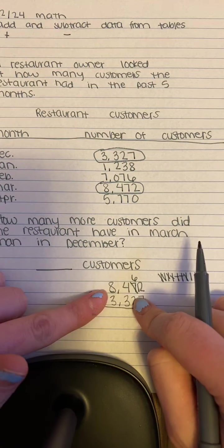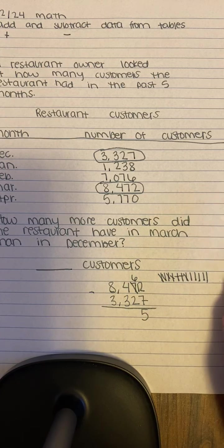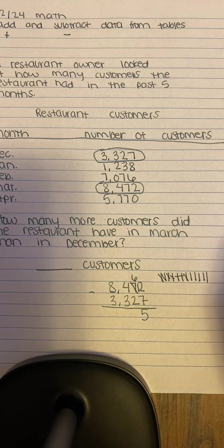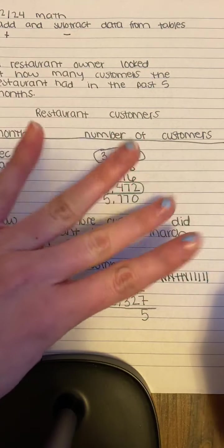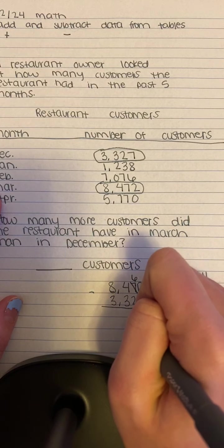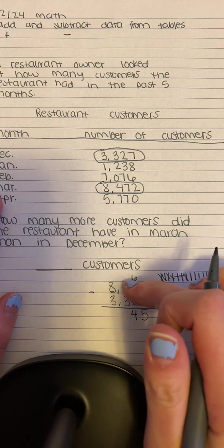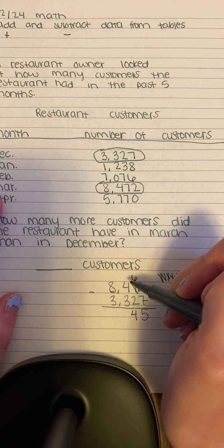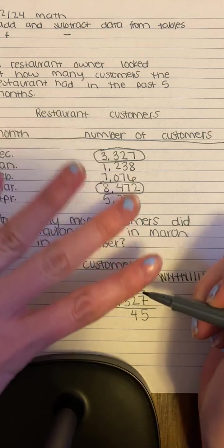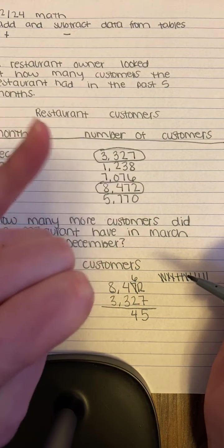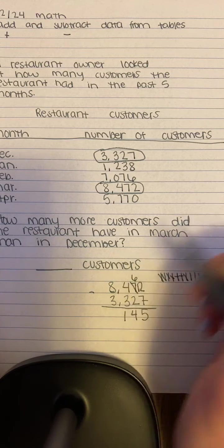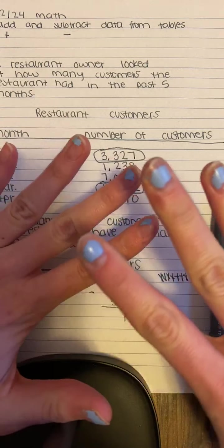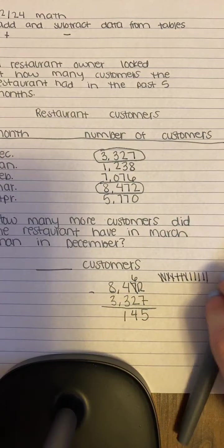Then I go to my tens place: 6 minus 2. I can put 6 on my fingers and take away 2, so I'm left with 4. Moving to my hundreds: 4 minus 3. I have 4 and take away 3, leaving 1. Then in the thousands: 8 take away 3. I have 8 and take away 3, and I'm left with 5.